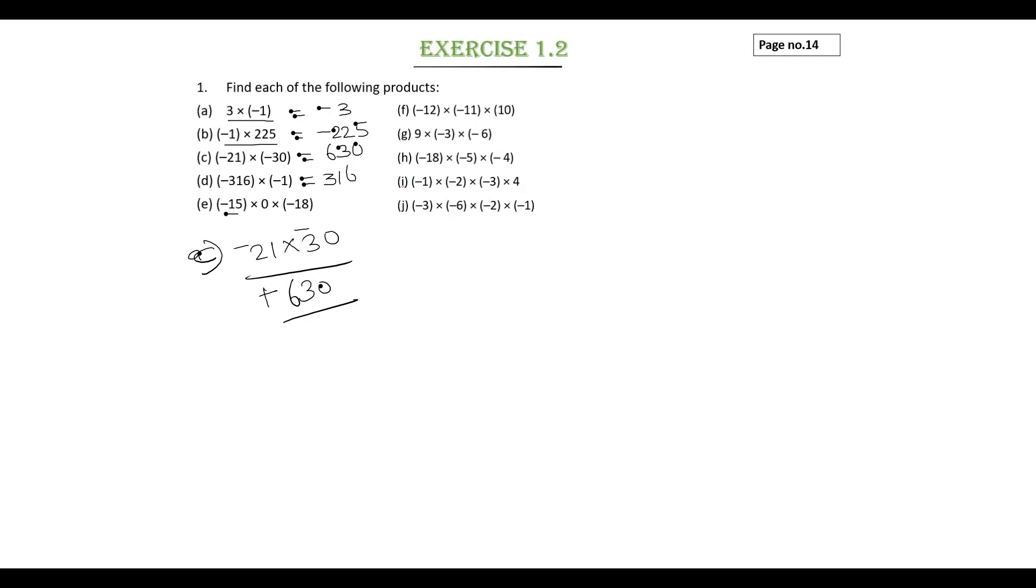Subdivision e: minus 15 into 0 into minus 18. Any integer multiplied by 0 gives result 0.